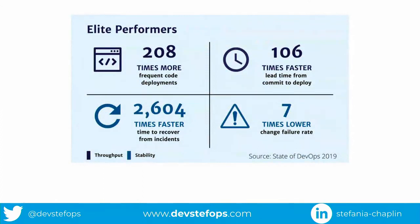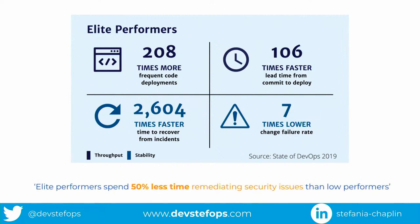When they looked at elite performers — this data is from 2019, a little old but still relevant — if you can deploy 200 times more frequently, or if you're 2,000 times faster, and if you can recover your system in hours rather than days, that's pretty good. And elite performers spend 50% less time remediating security issues than low performers. I think everyone would be happy spending less time remediating. And by having a robust DevOps pipeline and looking at these four metrics, that's how they did it.